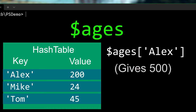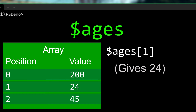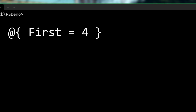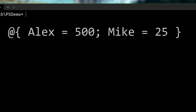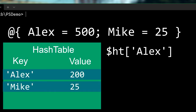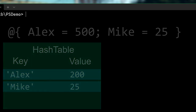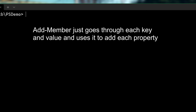With an array, you get a smaller value based on its position. With a hash table, you get a value not by its position, but by the key attached to it. To make a hash table, for each item you write the key, followed by an equals sign, and then the value. Separate multiple items with semicolons. So here's a hash table with an 'Alex' with age 500 and a 'Mike' with age 25. To find out the age of a person by name, write square brackets with their name in it. Add-Member literally goes through each thing in the hash table and for each one adds a new property, using the key as the property name and the value as what to put in.